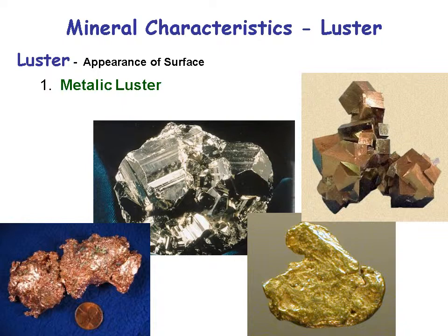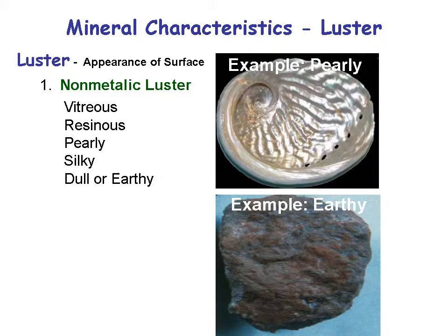Luster is another mineral property — it describes how something looks when light shines on it. It might look metallic, which is metallic luster. It can also be non-metallic luster: vitreous, resinous, pearly, silky, dull, or earthy. That hematite had a real earthy-looking luster.